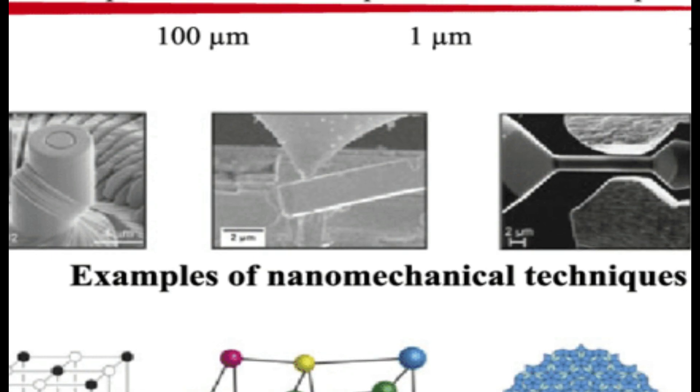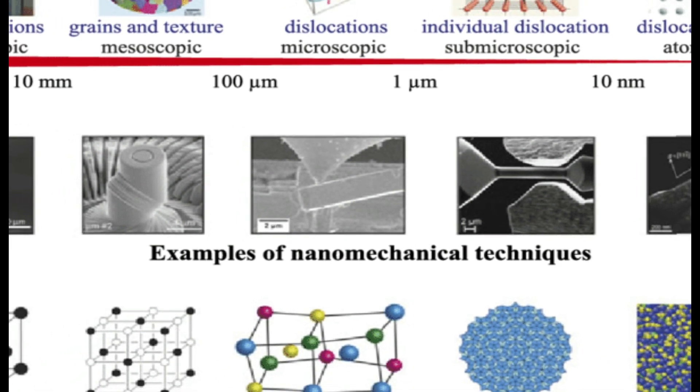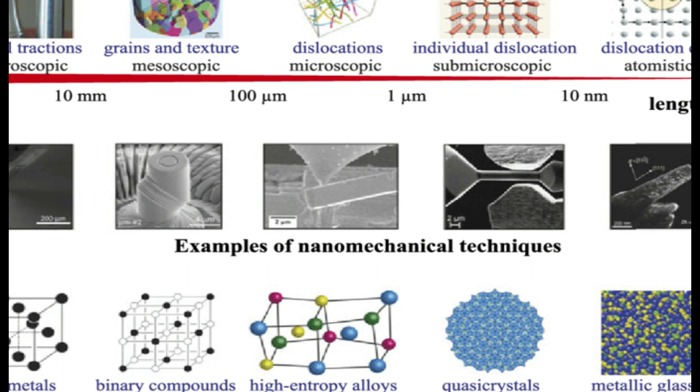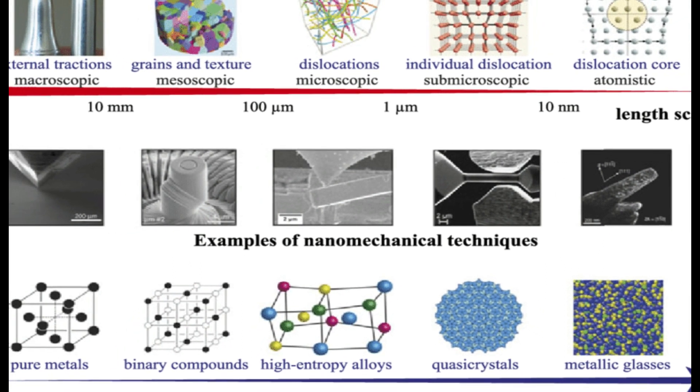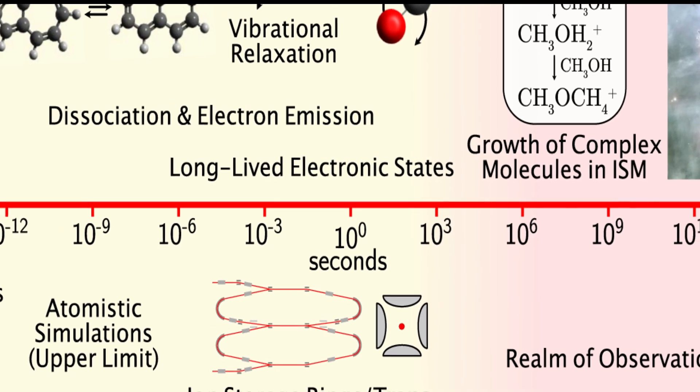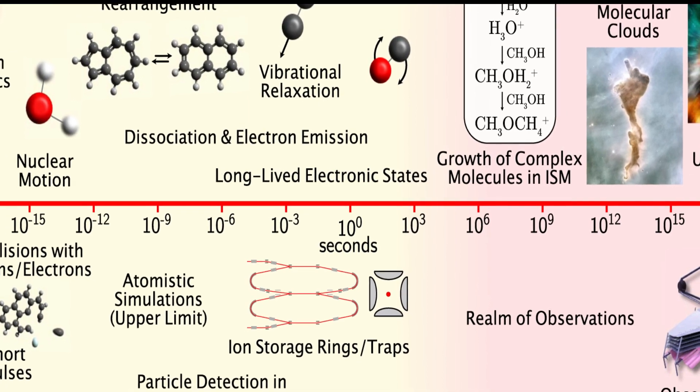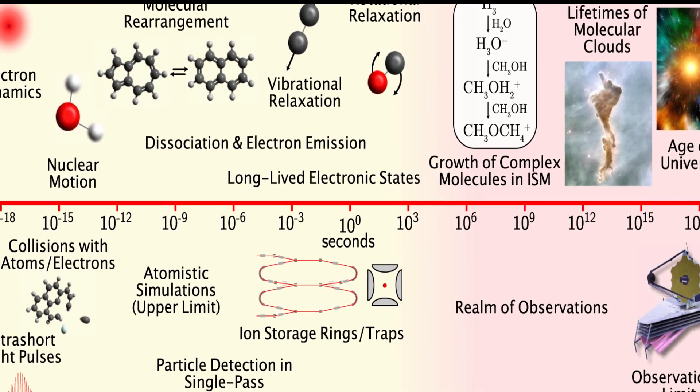Atomic and Molecular Scale: Stepping up the scale, we enter the domain of atoms and molecules. Atoms, the basic units of matter, consist of a nucleus surrounded by electrons orbiting in electron clouds. The size of an atom is typically measured in angstroms (10^-10 meters). This is where chemistry comes into play.